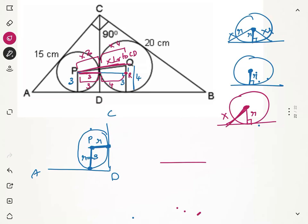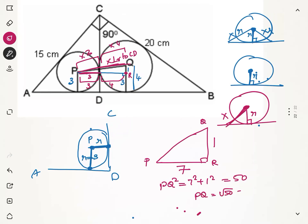Let us call point R where P drops a perpendicular to the horizontal level of Q. Then PR = 3 + 4 = 7 and QR = 4 - 3 = 1. Using the Pythagorean theorem, PQ² = 7² + 1² = 49 + 1 = 50. Therefore PQ = √50 = 5√2 ≈ 7.07. So the distance PQ, even though very close to 7, is not exactly 7 — it is 5√2 or √50. In the answer options, both 7 and √50 may appear, but the correct answer is √50 or 5√2.